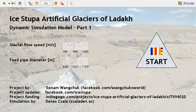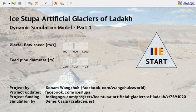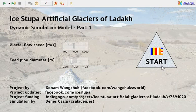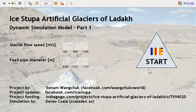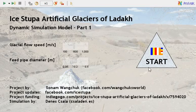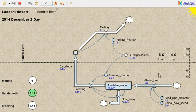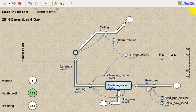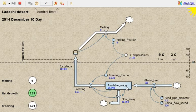The glacial feed is coming down from the mountain with a certain debit and gives us the available water. So let's start the model and see how it works. We have the glacial feed coming down from the mountain, and then it gives us the available water to form the artificial glacier.